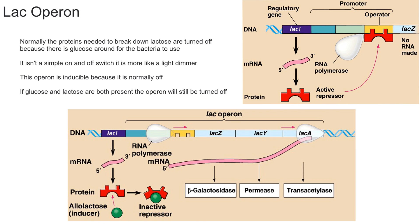To summarize: if you have a lot of glucose and no lactose, the repressor is bound and the operon is off. If you have a lot of both glucose and lactose, the repressor is removed, but you still don't create the proteins because glucose is present. The main thing to remember from this video is that the lac operon is only turned on when you have a high amount of lactose and no glucose.